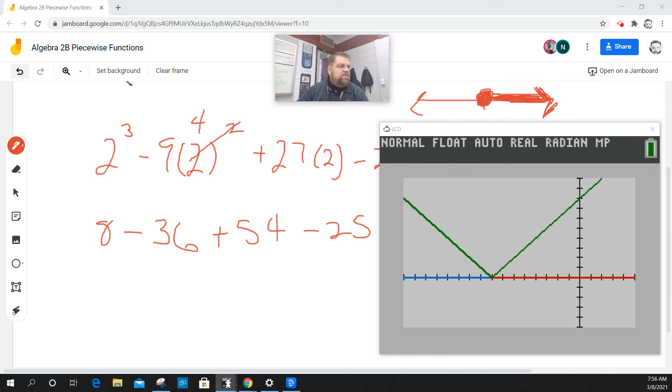I've got a couple of those things going, so let's clear this out. And we're going to say 8 minus 36 plus 54 minus 25.